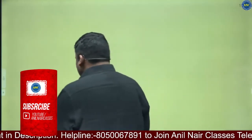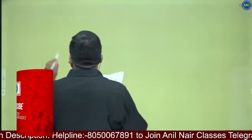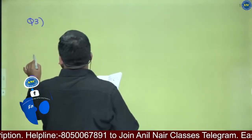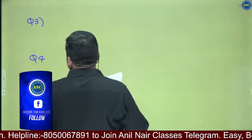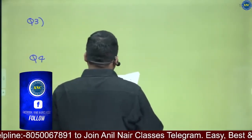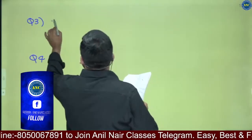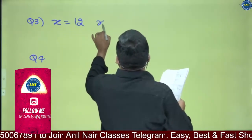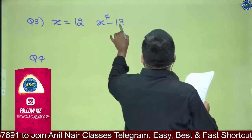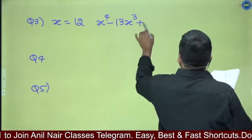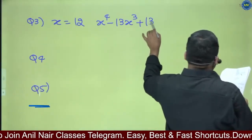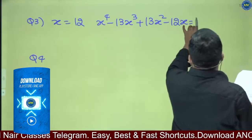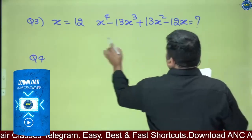Now see the magic that is getting unfolded. Question number 3: x equivalent to 12. The expression is x power 4 minus 13x cube plus 13x square minus 12x.